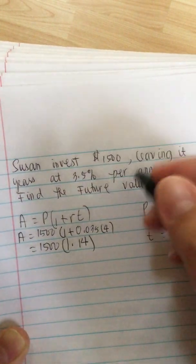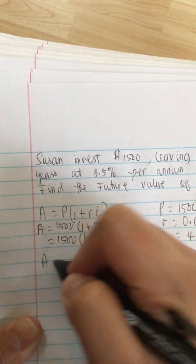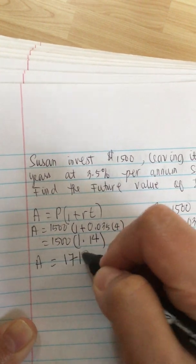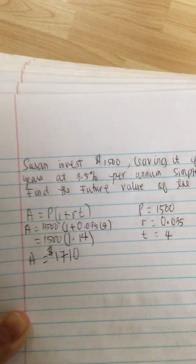And this is equal to 1,710. A is equal to $1,710.